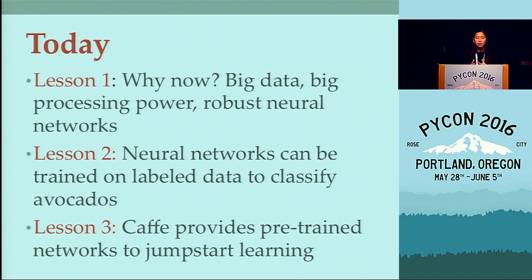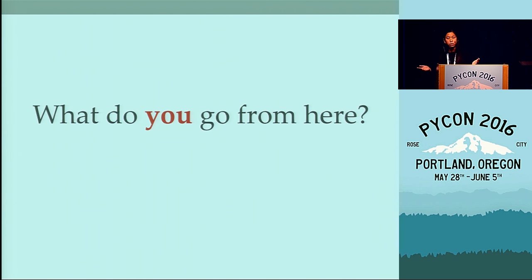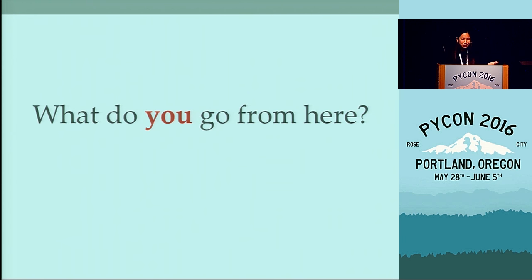Three lessons today, just to rehash: deep learning is super hot right now because of the access to the data, the processing power, and these robust neural networks. Neural networks themselves, if we zoom in, can be trained on data to classify avocados and other things. And Caffe is one way to load pre-trained models to jumpstart the data. But that's enough about me. Where do you go from here?